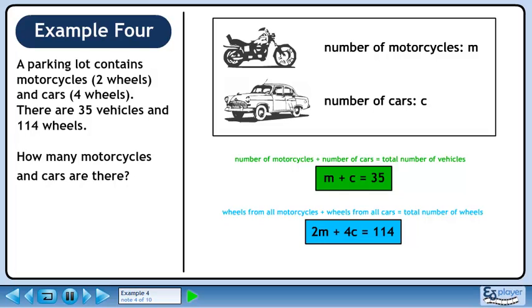The number of wheels from motorcycles is 2M since each motorcycle has two wheels. The number of wheels from a car is 4C. The total number of wheels is 114.